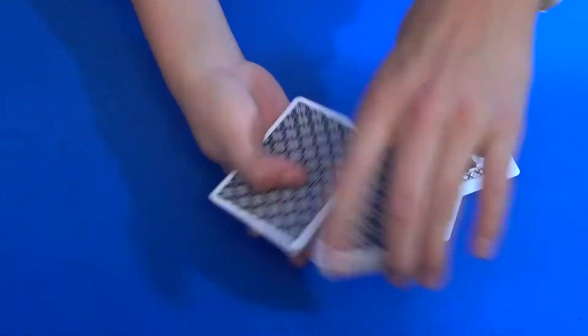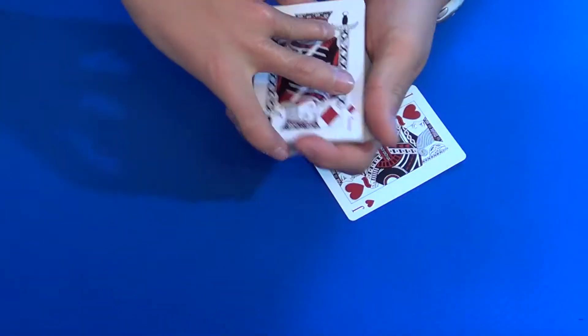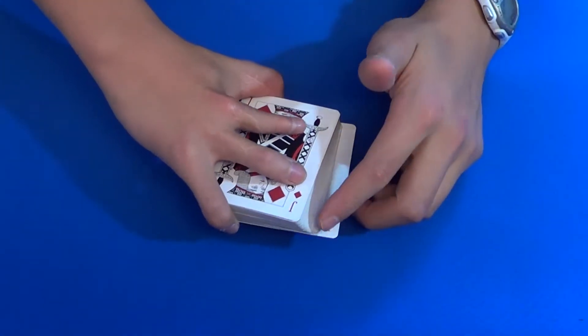So before we get into the actual trick, I just want to teach you that move. So look at the bottom card on your deck. For me it's the two of diamonds. Put one jack on top and one jack on bottom, but here's the thing: you're going to out jog that jack and so you can just see the pip.